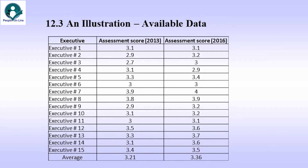Let's see the available data. We can see three columns: Executive, assessment score 2013, and assessment score 2016. The scores for the two years are put next to one another, and we can also see an average of 3.21 for 2013 and 3.36 for 2016.